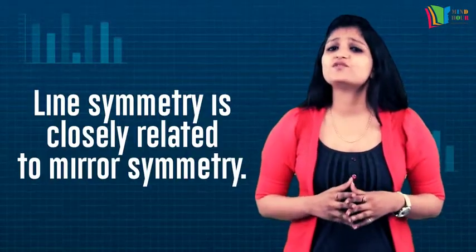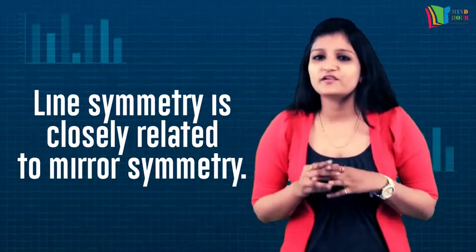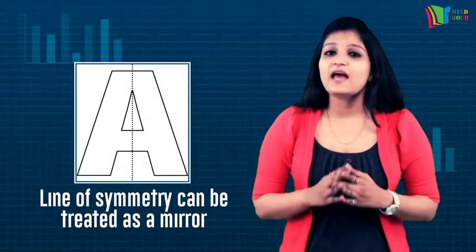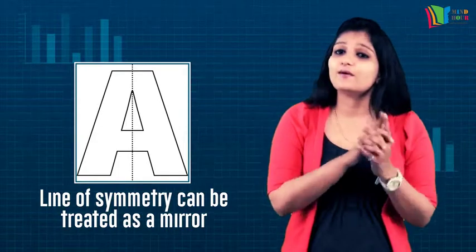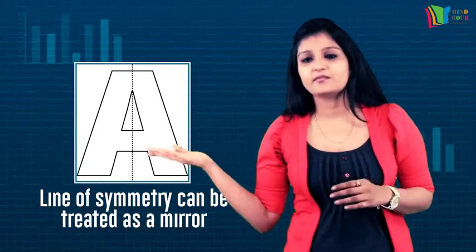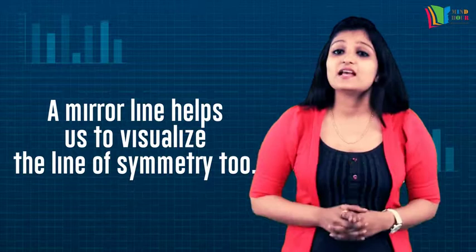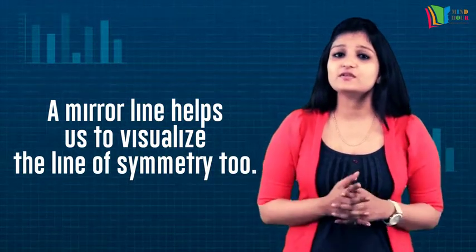The concept of line symmetry is closely related to mirror reflection. A shape has line symmetry when one half of it is the mirror image of the other half. A mirror line thus helps us to visualize a line of symmetry.